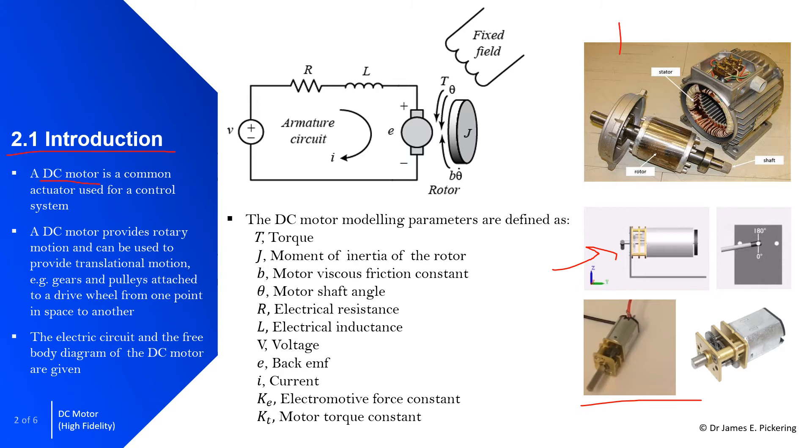So we've got here a DC motor that's taken apart, so you can have a look at the different parts within the motor. The rotor, shaft and stator. You can see that. And then to begin with the modelling, what we've got here is an electric circuit and the free body diagram. So electric circuit and the free body diagram for the DC motor.